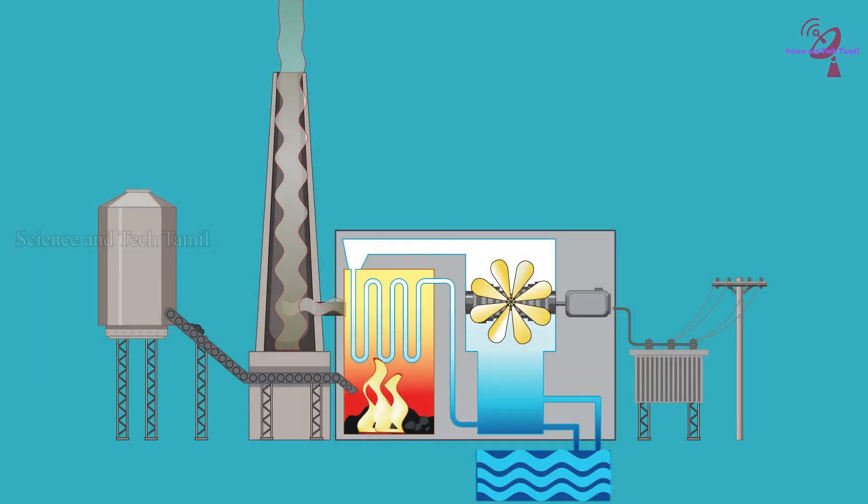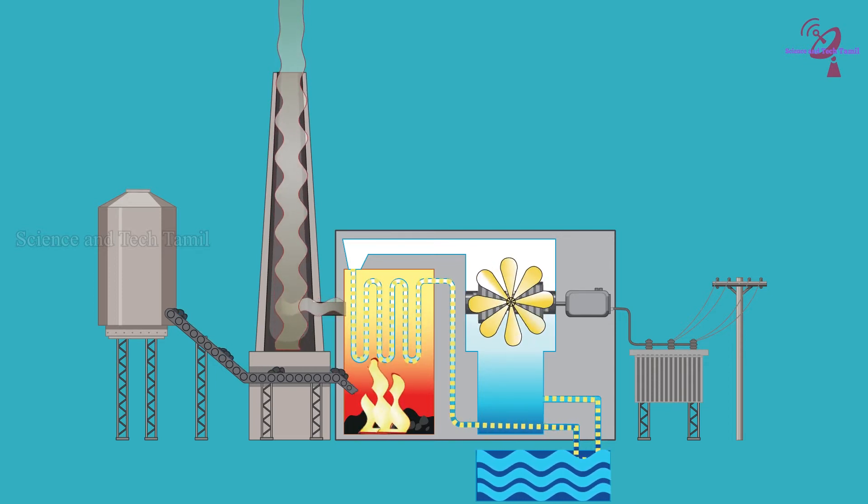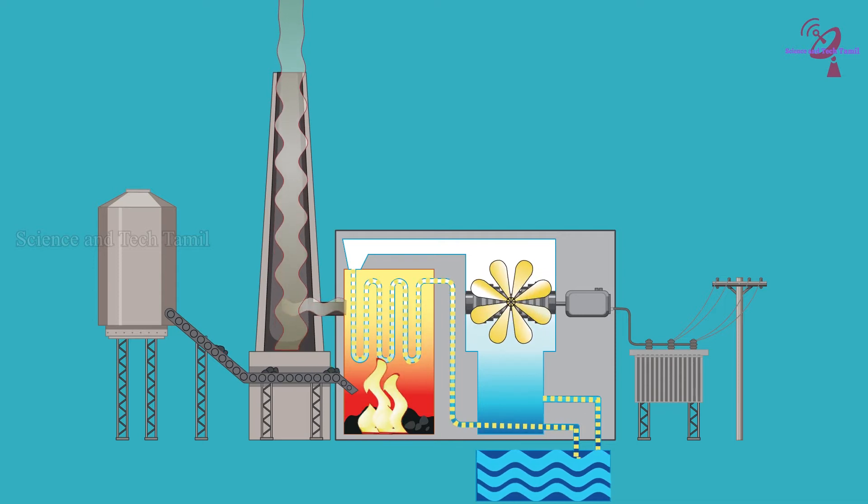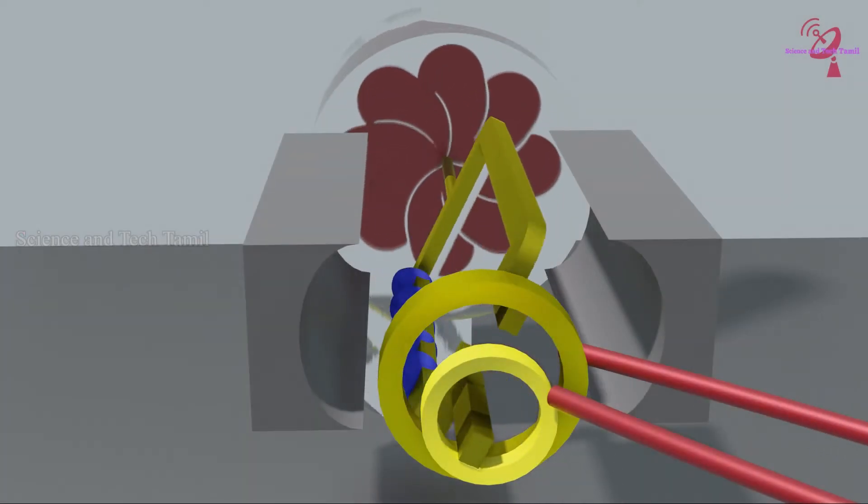In all thermal power stations, they use coal as fuel. The coal burns in a separate compartment, and from this heat energy, water starts to heat up. At high Celsius point, water starts to evaporate. From this steam pressure energy, the turbine starts to turn. Whenever the turbine starts to rotate, electricity is generated.